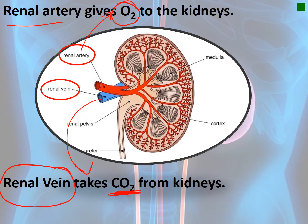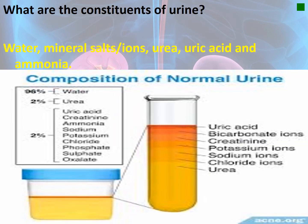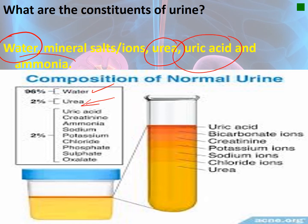Urine is composed of water, which represents about 96%, mineral salts and ions such as sodium, potassium, chloride, phosphate, and sulfate representing about 2%, urea representing about 2%, uric acid, and ammonia.